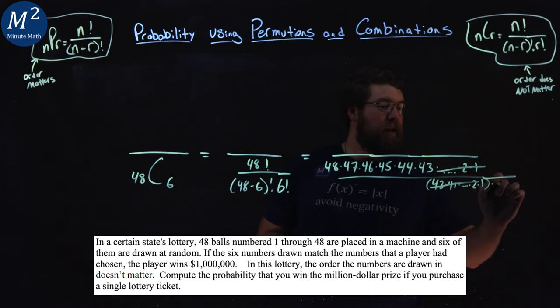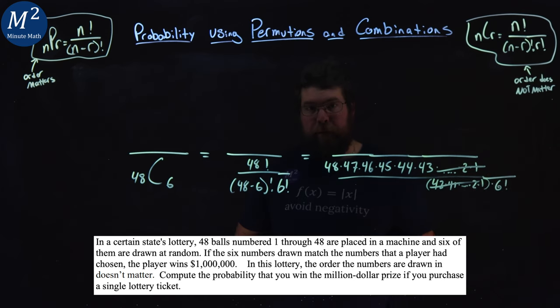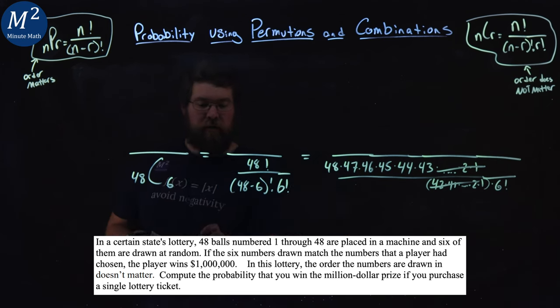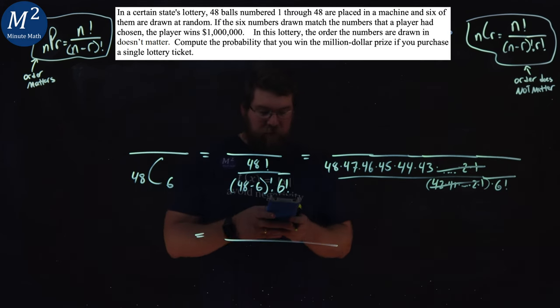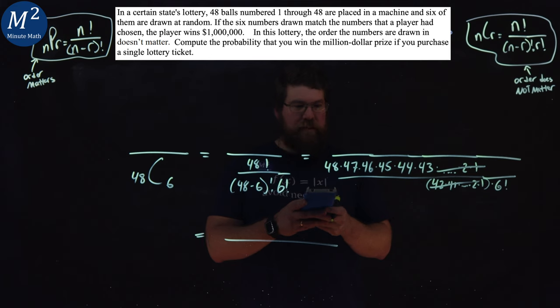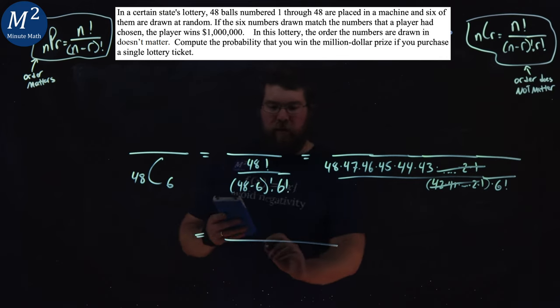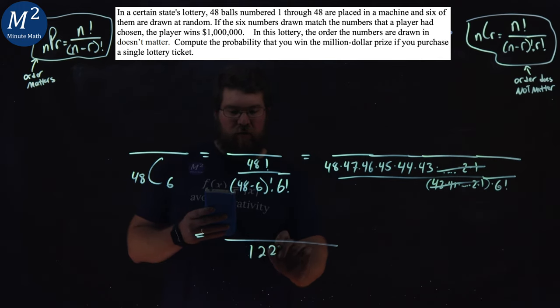And then we have times 6 factorial right there. So if you want to multiply that out, or you can use NCR function on your calculator, get the big denominator here. 48 times 47 times 46 times 45 times 44 times 43 divided by 6 times 5 times 4 times 3 times 2 times 1. And we have 12,271,512.